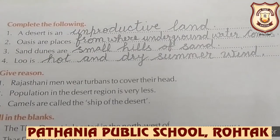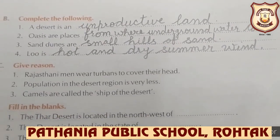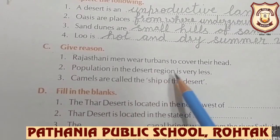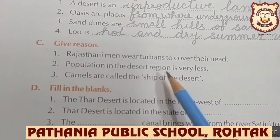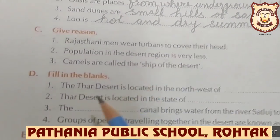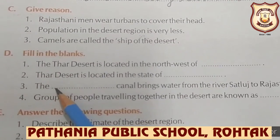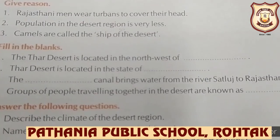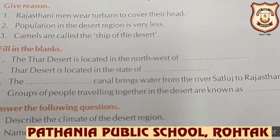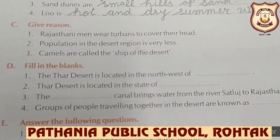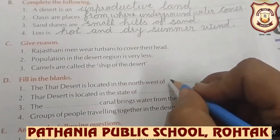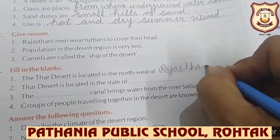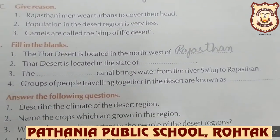Part C: give reasons — we will write this part in the notebook only. Now Part D: fill in the blanks. Number one: the Thar desert is located in the north west of Rajasthan — write 'Rajasthan.'